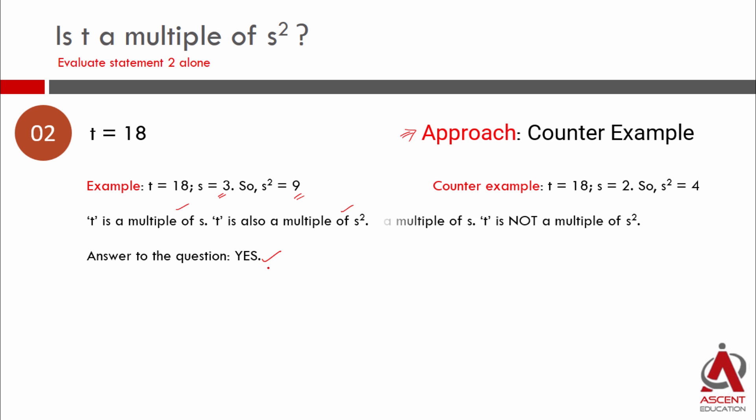Counter example. t is equal to 18. s is equal to 2. Is t a multiple of s? Yes. s square is equal to 4. Is 18 a multiple of 4? No. So sometimes yes, sometimes no. So with statement 2 alone, we have not been able to come up with a definite answer.